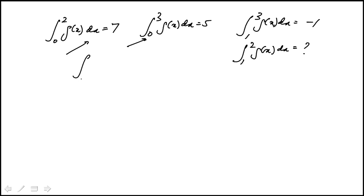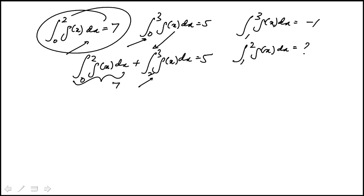If I do 0 to 2 plus 2 to 3, that's equal to 5. So all I'm doing is rewriting this piece. That piece is 7, so that means 2 to 3 is equal to minus 2.